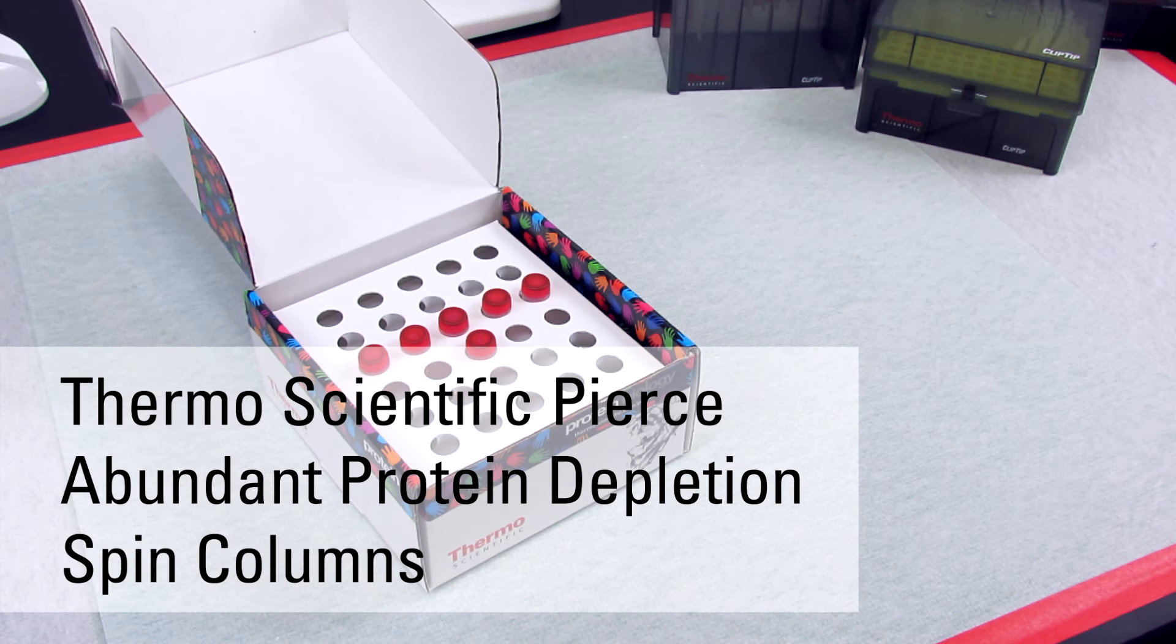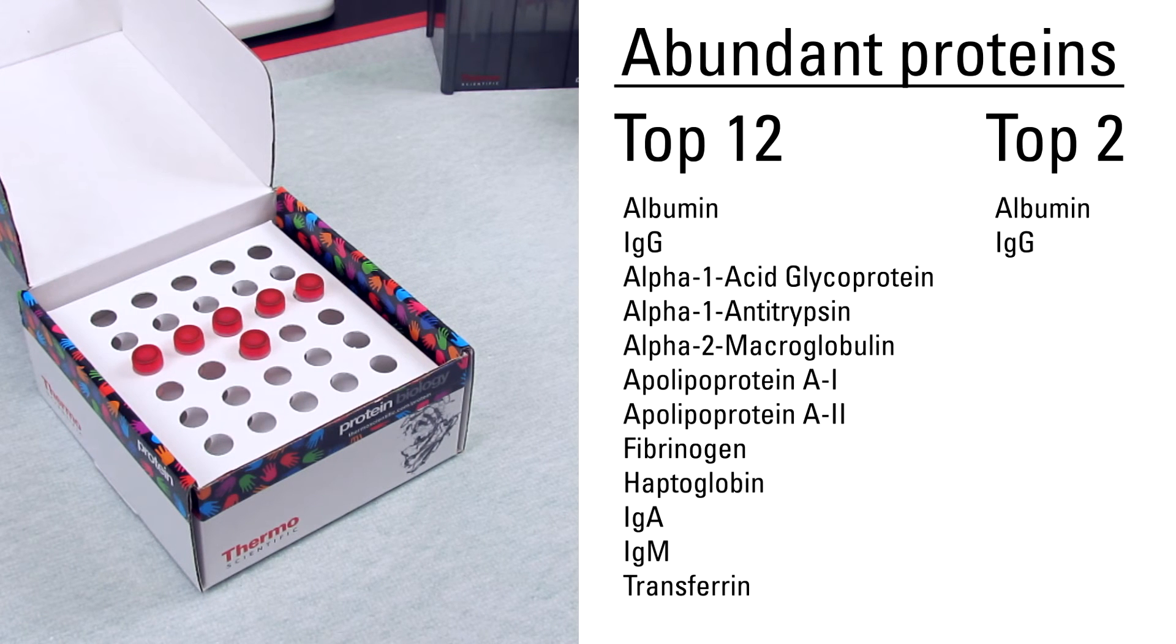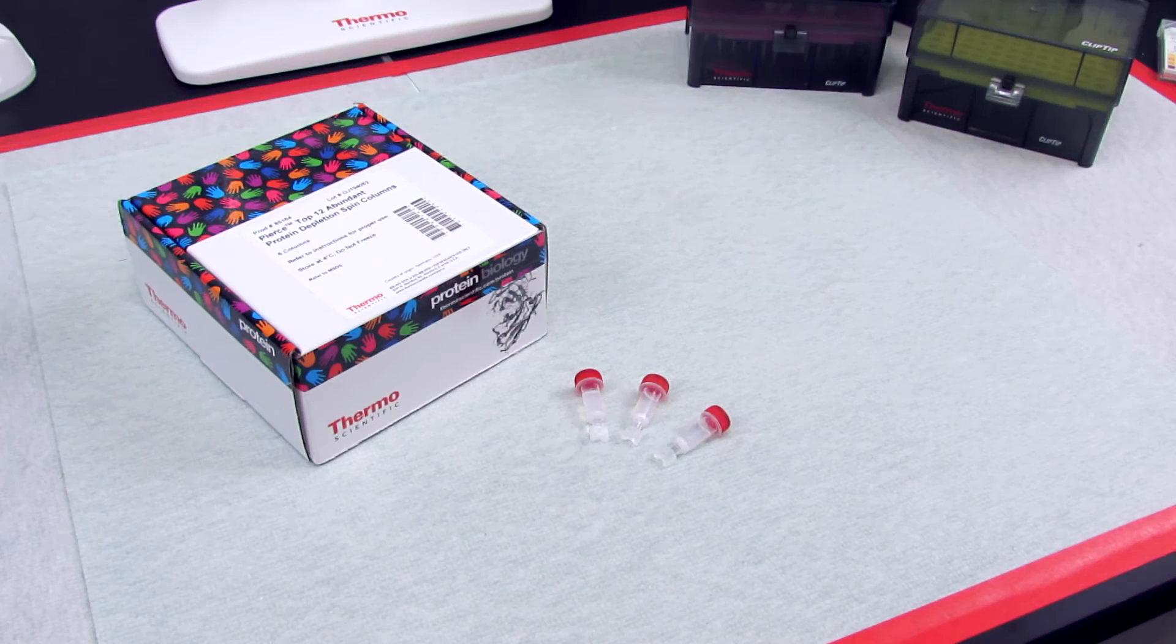Thermoscientific Pierce Abundant Protein Depletion Spin Columns rapidly remove the top 12 or top 2 most abundant proteins from serum or plasma samples so that low-abundance proteins can be detected.